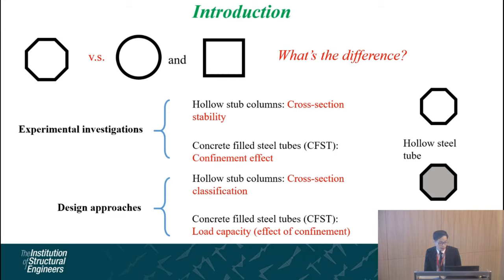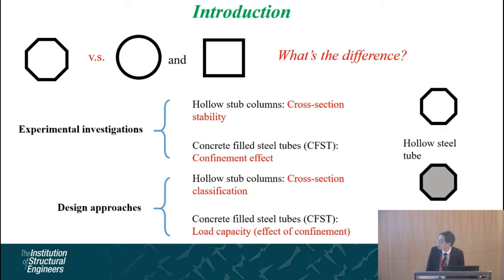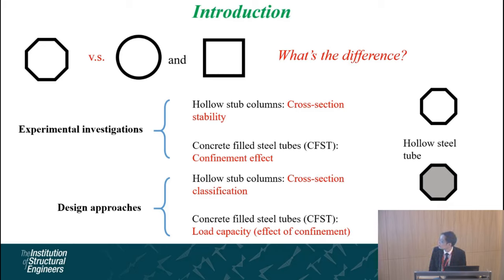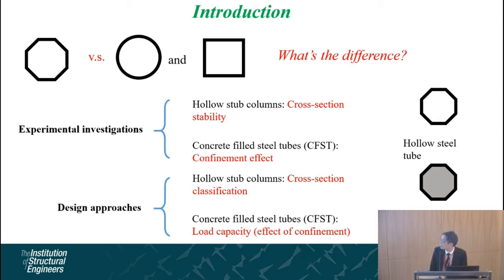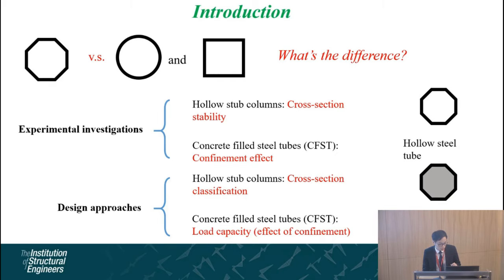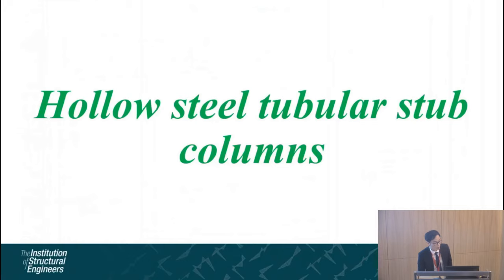We conducted investigations on all three cross-section shapes. This study focuses on hollow steel tubes and also concrete-filled steel tubes. The experimental investigations focus on the cross-section stability of hollow stub columns and the confinement effect of concrete-filled steel tubes. For design, we focus on cross-section classification of hollow sections and the load capacity considering confinement effects in concrete-filled steel tubes.